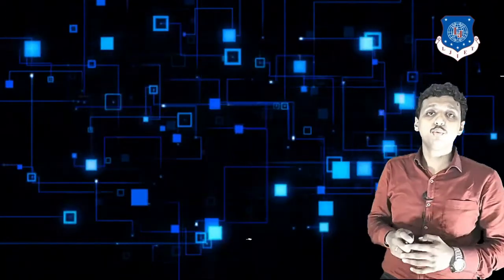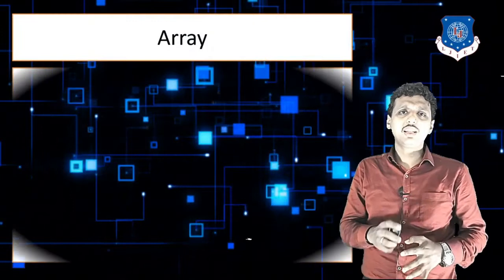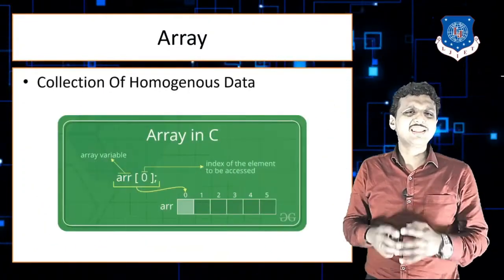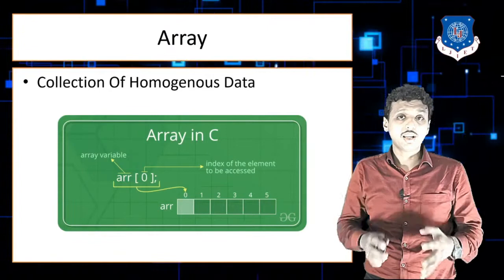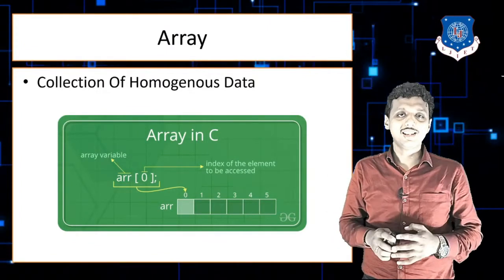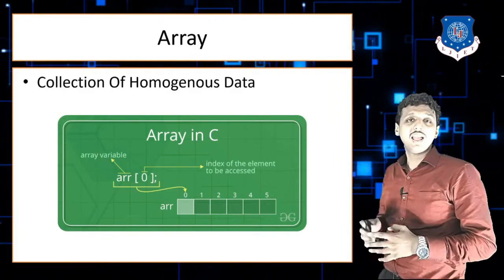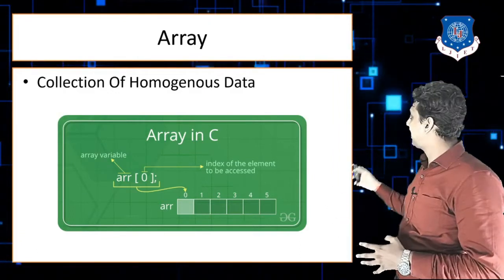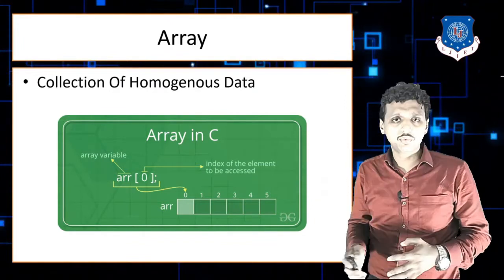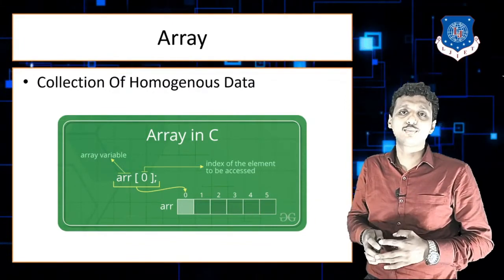Now let's take some basic examples. The first one is array. Array means a collection of homogeneous elements. You can see an array which contains elements 10, 20, 30, 40, and 50. The first index in the array starts from zero.